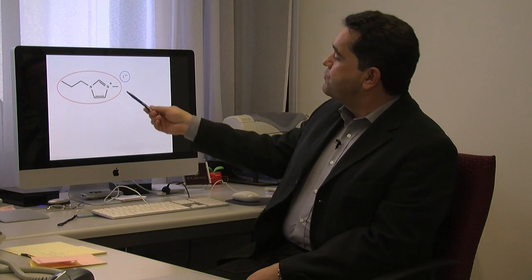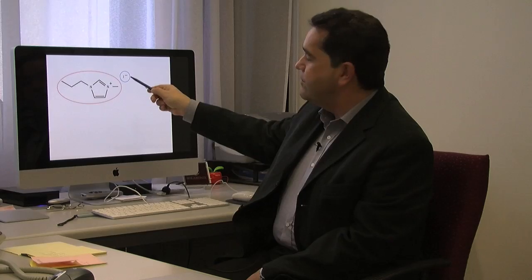In our case, we worked on a special kind of ionic liquid where one of the ions, in this case the negative ion, was an iodide ion. And this iodide can be involved in electron transfer. It is a redox active ion.